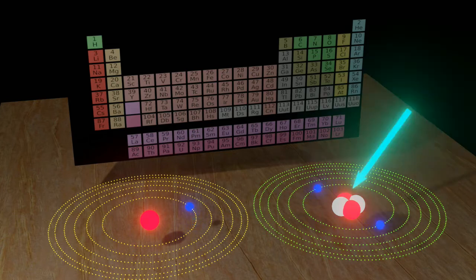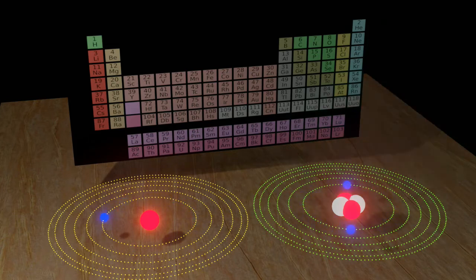But in helium, two protons along with two neutrons build up its nucleus, and two electrons revolve around it.